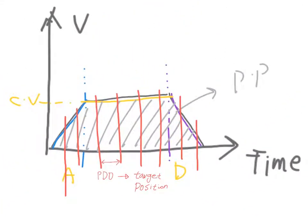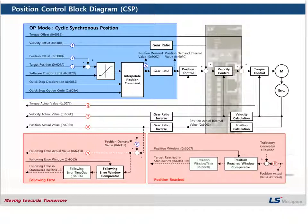The correct mode selection depends on the system circumstance. For example, if the system does not have stable communication between the master and drive, maybe PP mode will be the better option. This is the basic diagram of CSP mode — it shows the operation process of CSP. I'm not going to explain all steps here, but I would like to check the parameters which are required to be set for position control and their functions.